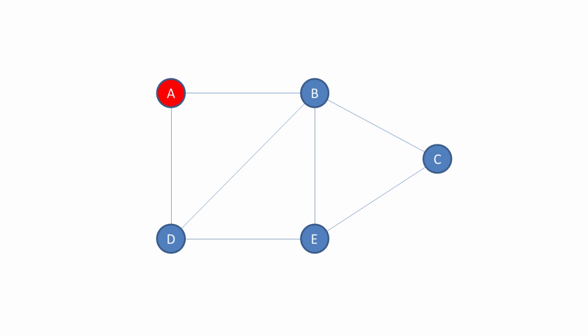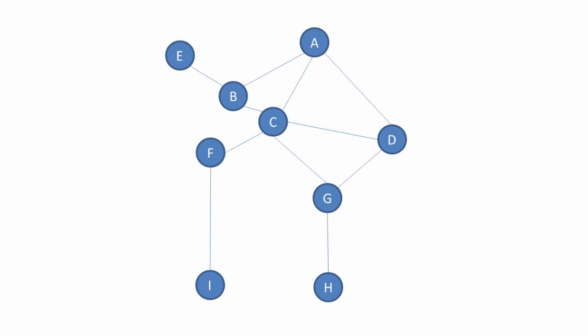So how does breadth first traversal work? Breadth first traversal starts at the first vertex and tries to visit all of the vertices as close to this vertex as possible. We're effectively moving through the graph layer by layer, first examining the layers closer to the first vertex and then moving down to the layers furthest away from the starting vertex. We examine everything close to A and then everything close to B. You can see we're moving down through the layers until we traverse the entire graph.